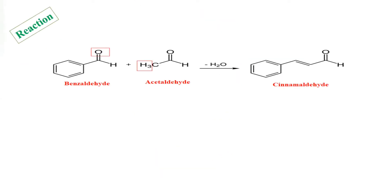The aromatic aldehyde chosen should not have active hydrogen. Benzaldehyde is chosen as the aromatic aldehyde, as it does not have any alpha hydrogen. The aliphatic aldehyde chosen is acetaldehyde, which has alpha hydrogen. These two react in the presence of 10% NaOH, or 10% alkali.